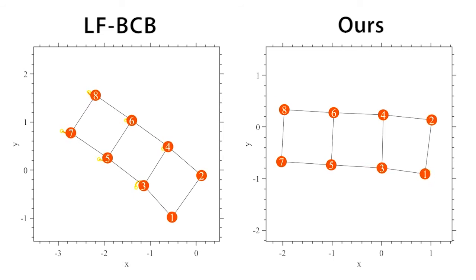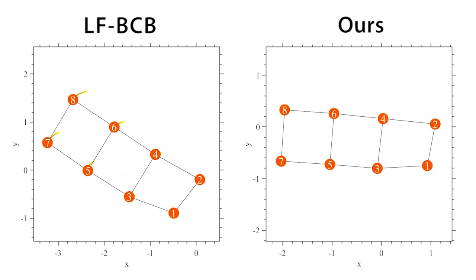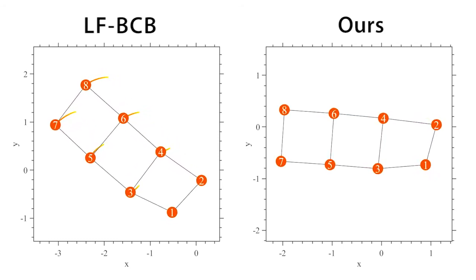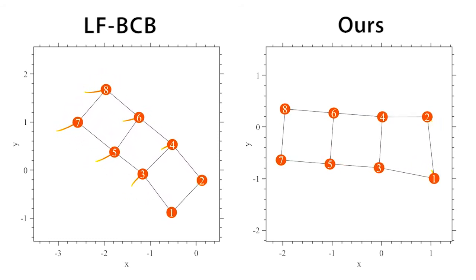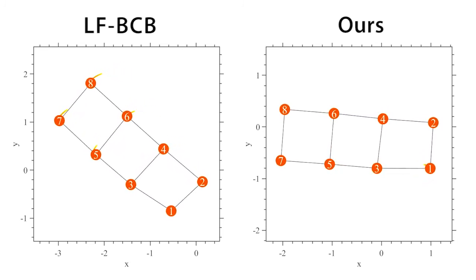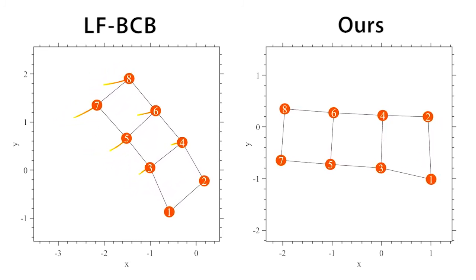To test the sensitivity of the control strategies to noise and measurement inaccuracies, two periodic additive disturbances are added to the positions of the first two agents. In the LF-BCB approach, the additive disturbance is amplified by the follower agents, while under our approach the disturbance is attenuated.